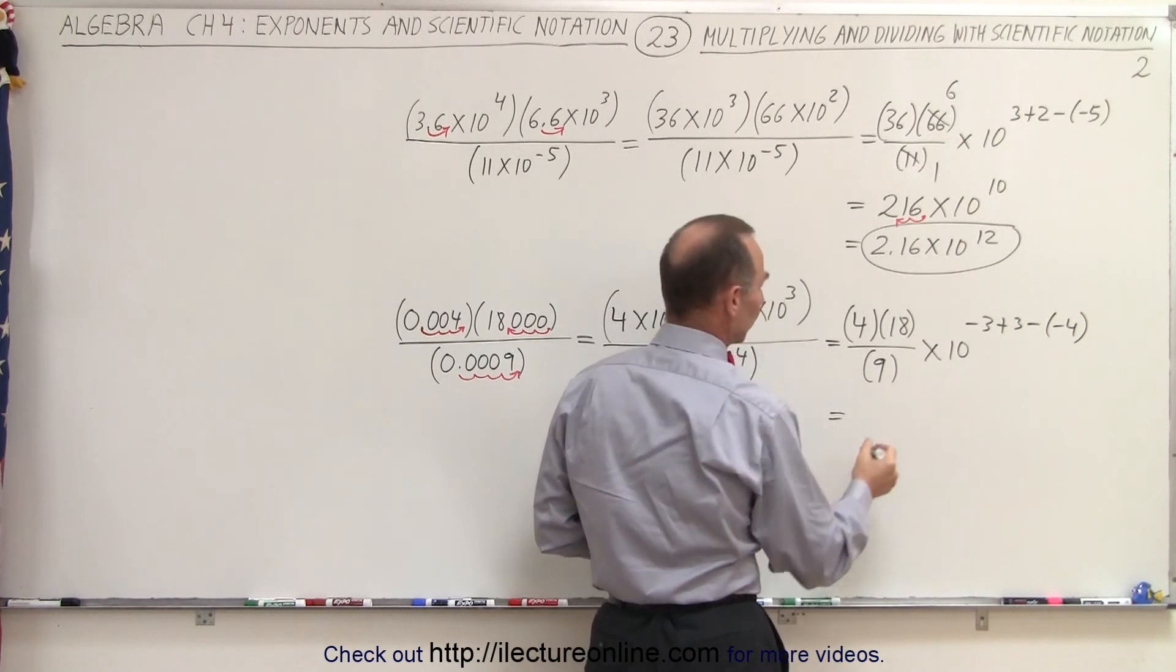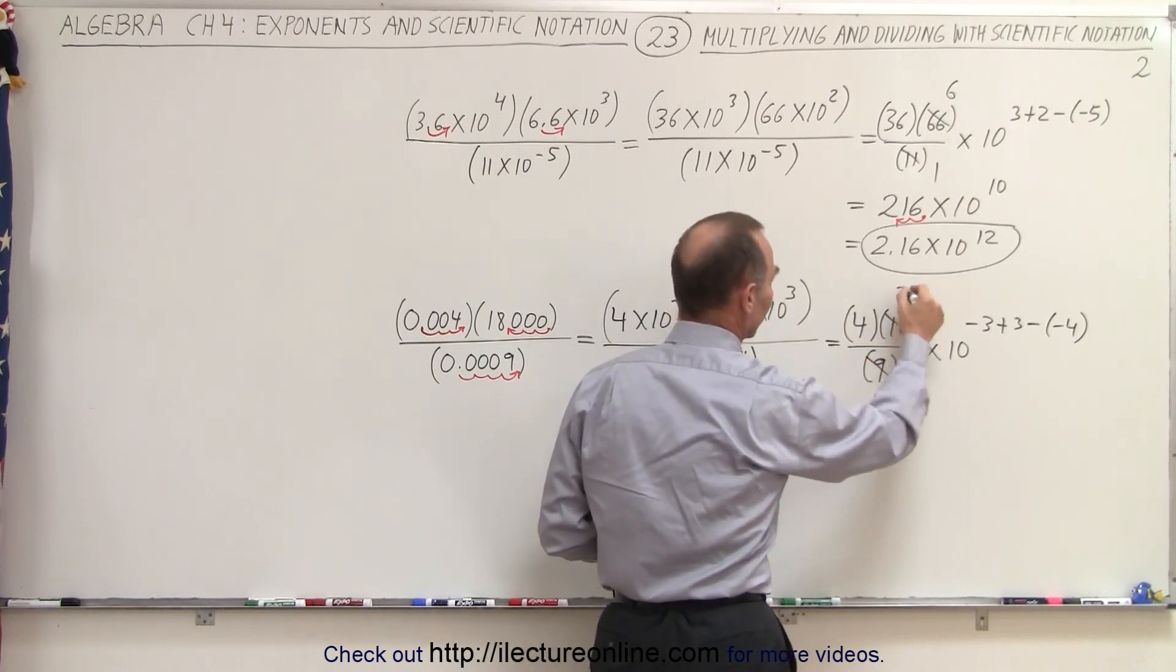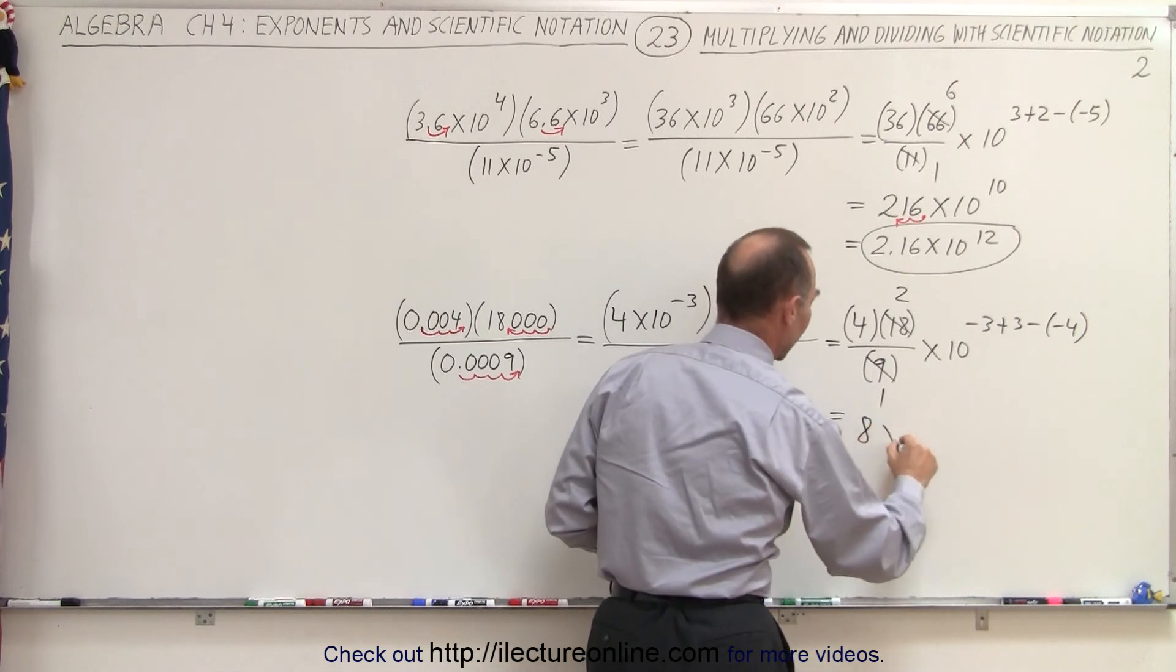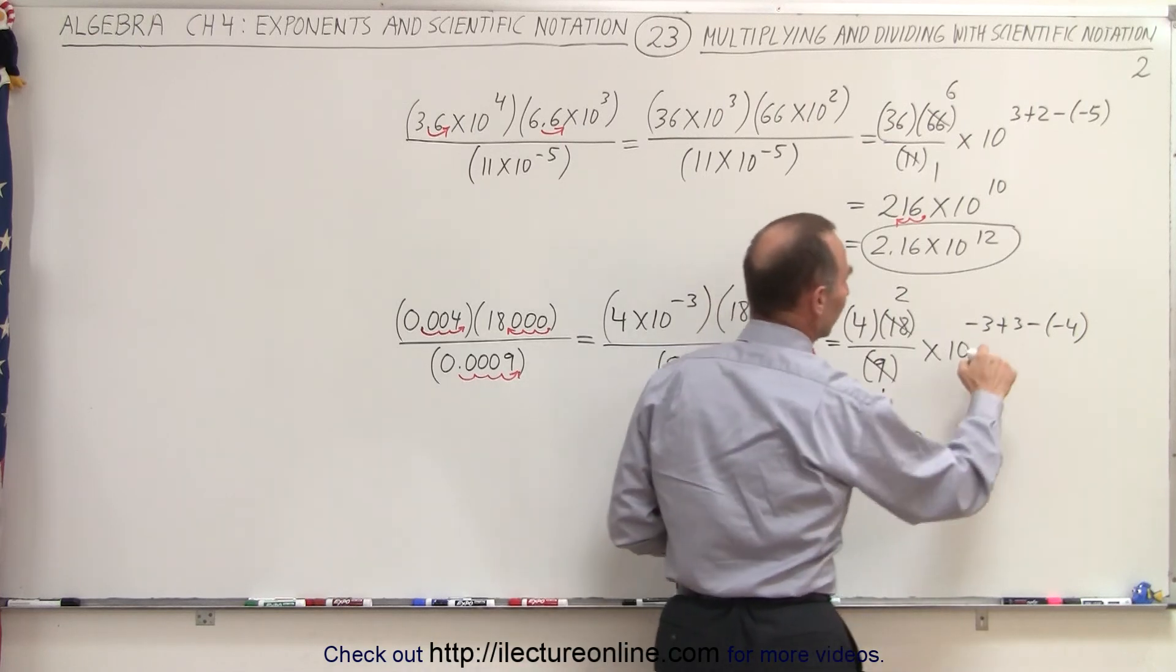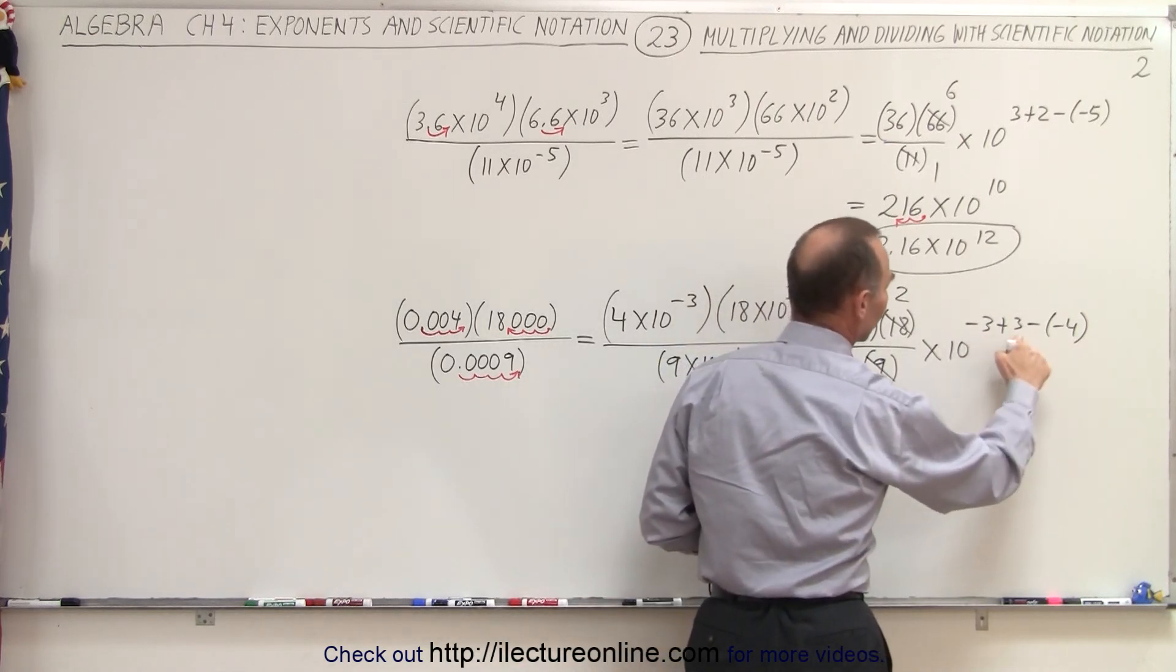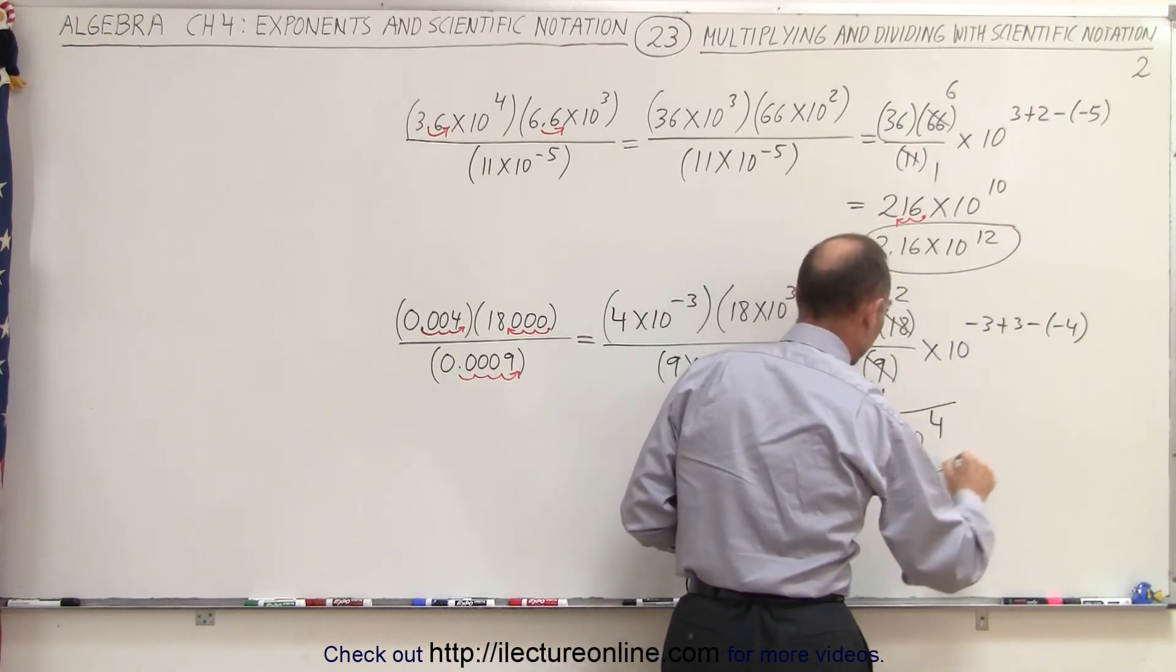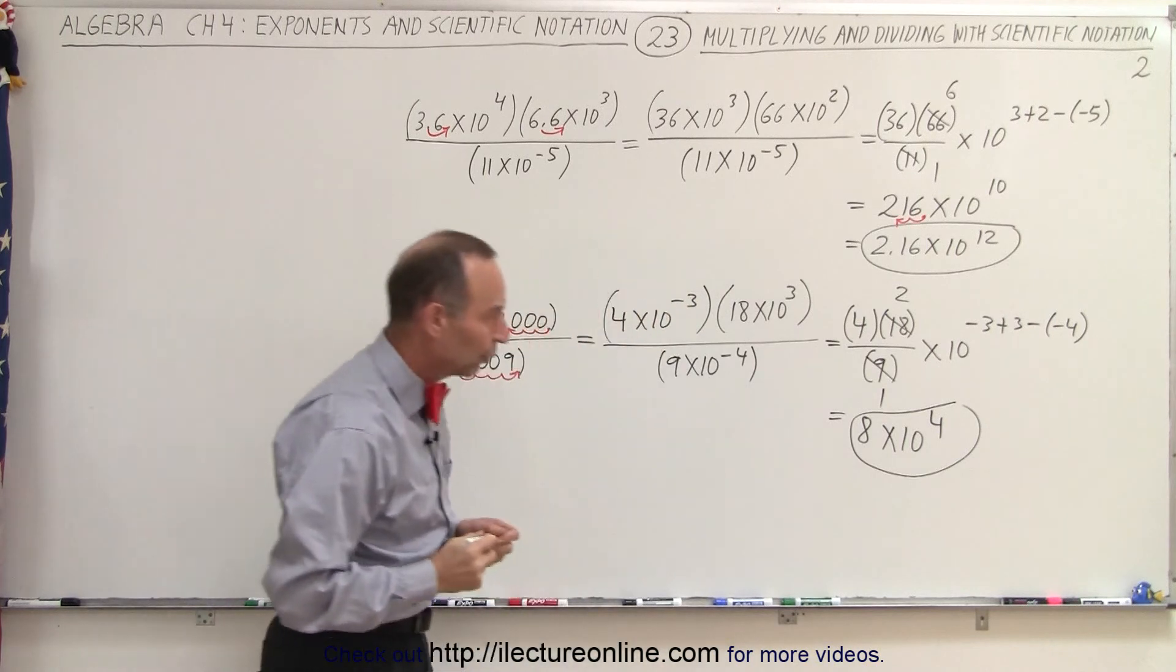So this is equal to, well, the 9 and the 18 are divisible by 9. So this becomes 2 and 1. So we end up with 8 times 10. This is a minus 3 plus 3 that cancels out. And a minus times a minus is a plus 4. So the final answer would be 8 times 10 to the fourth.